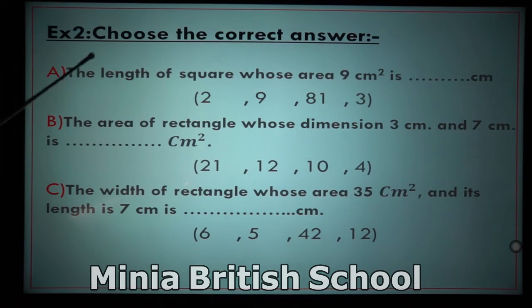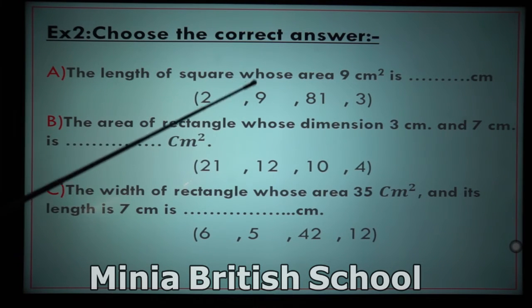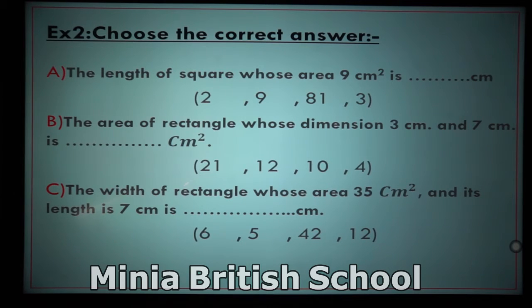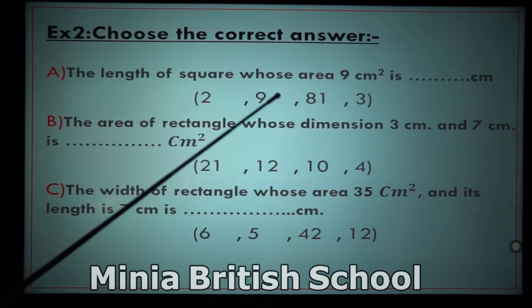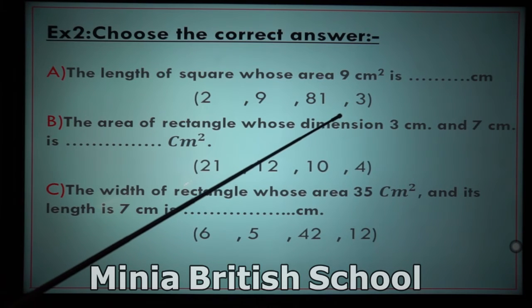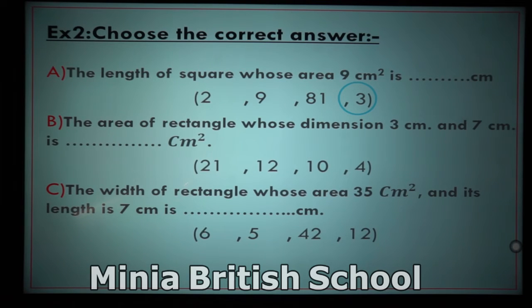Exercise number two, letter (a): find the side length of a square whose area is 9 square centimeters. The area of a square equals side length times itself, so I need two same numbers that when multiplied give 9. Two times two gives 4 — no. Nine times nine gives 81 — no. Three times three equals 9 — yes! So the side length here equals 3 centimeters.